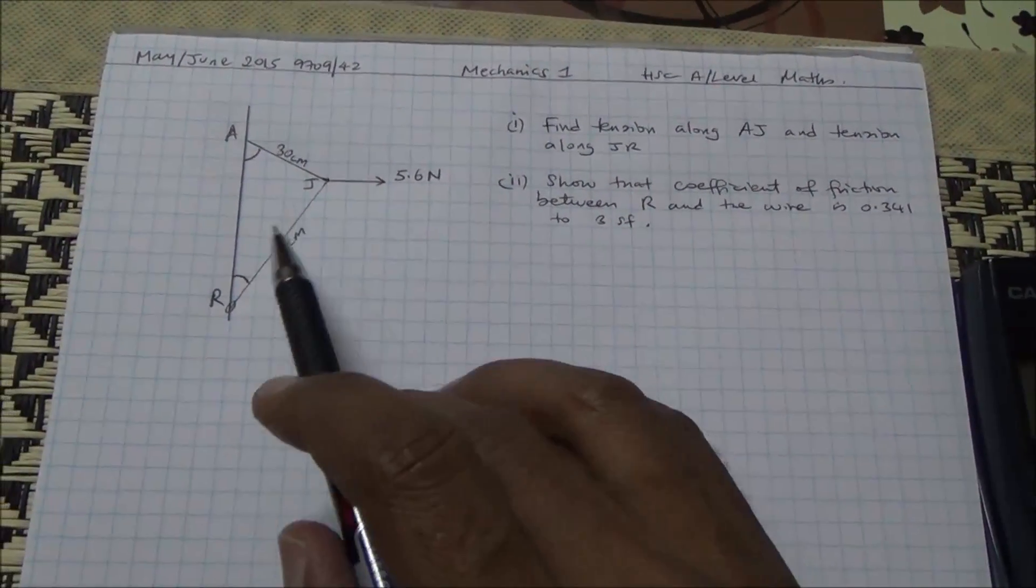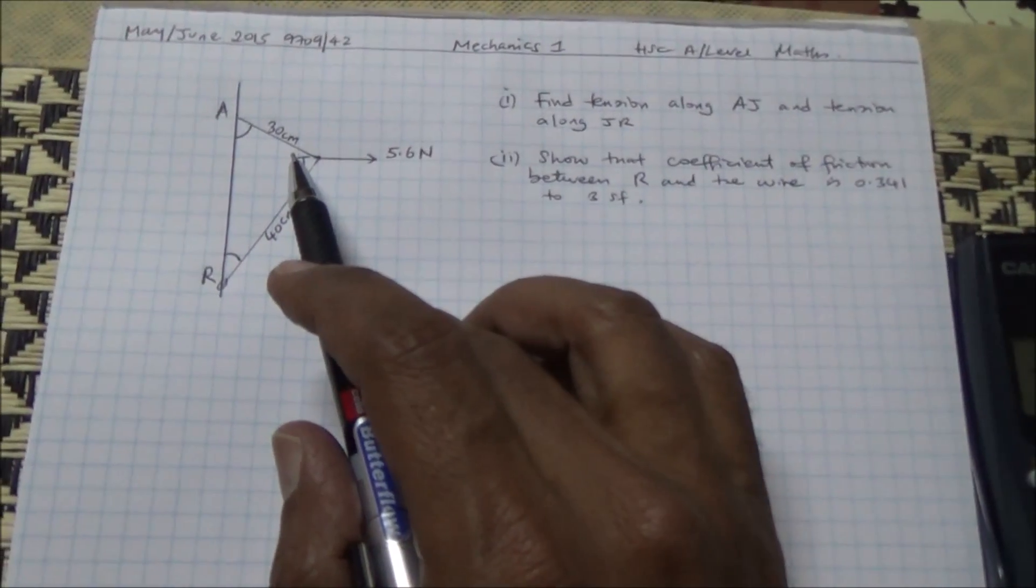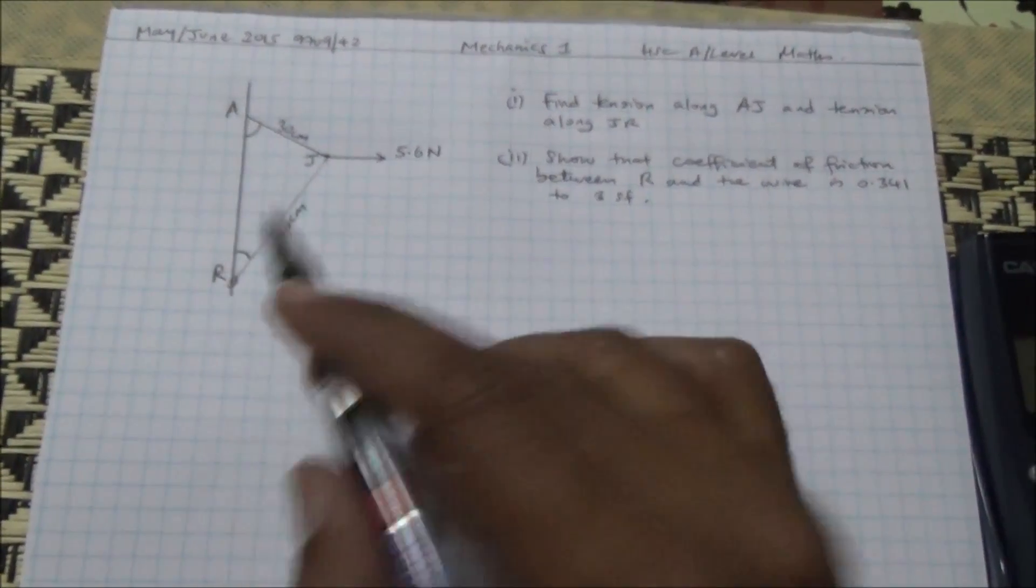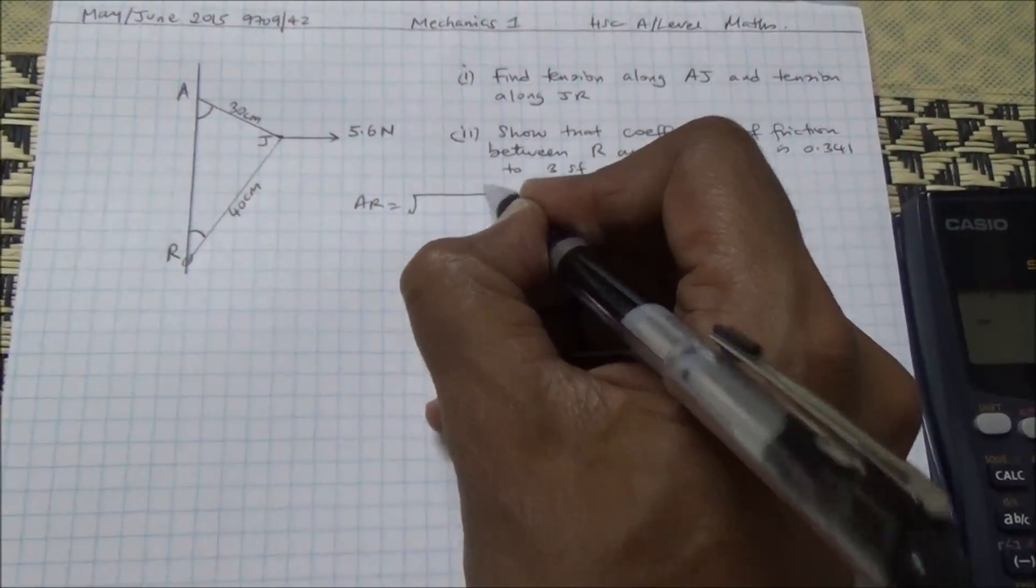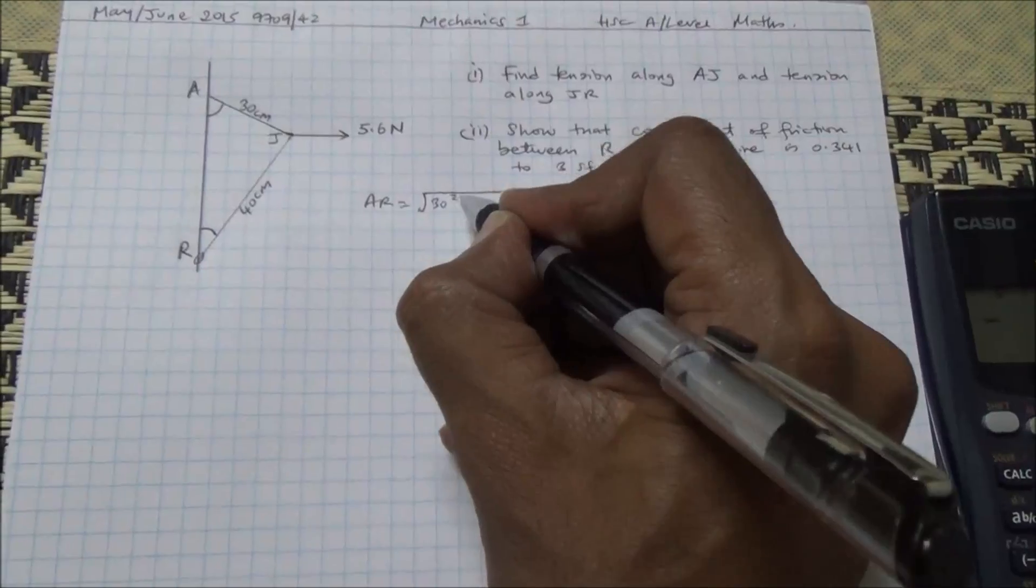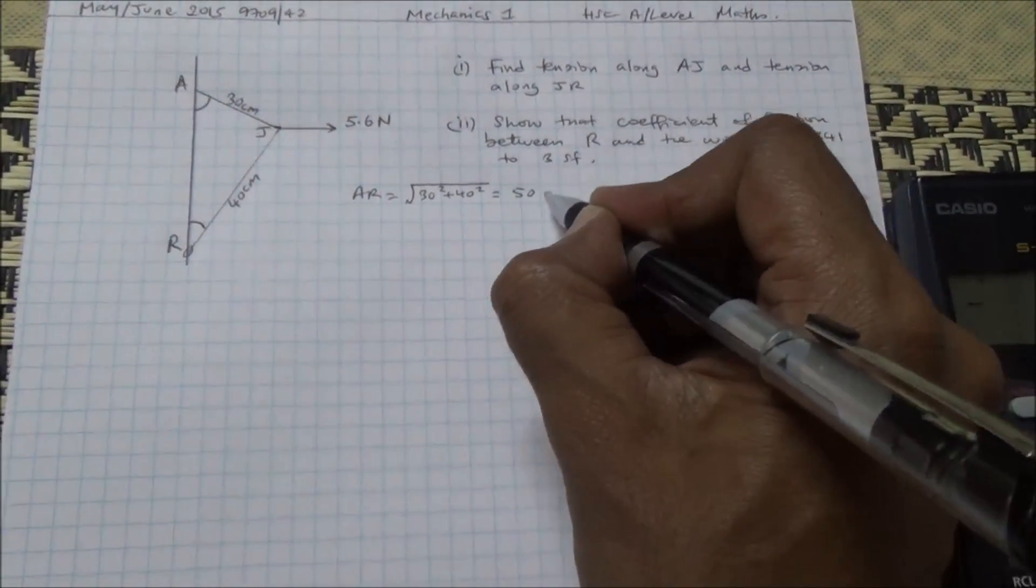Now, for the first part, to find the tension in that string and that string as well, what I would find first of all is the length of AR. By Pythagoras' theorem, we know that AR is equal to the square root of 30 squared plus 40 squared, which is going to give us 50 cm.